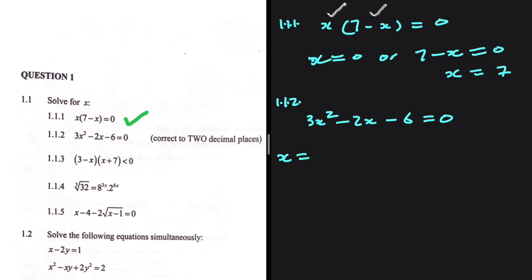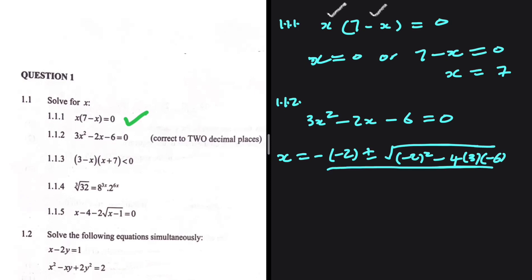So that is x equals negative b, which is negative 2, plus or minus the square root of b squared — so we have negative 2 squared — minus 4ac. The value of a is 3 and the value of c is negative 6. And we are dividing everything by 2a, which is 6. If you put that in your calculator, you get x equals negative 1.12 or x equals 1.79. Those are the values of x correct to two decimal places.